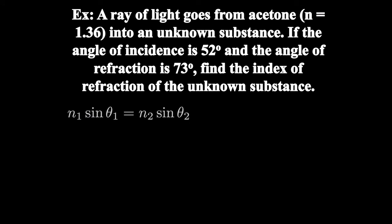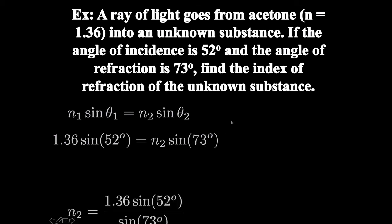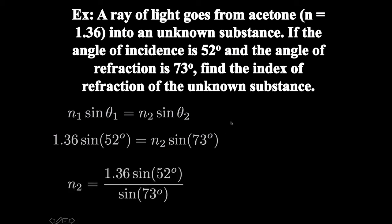So we'll start with Snell's Law again. Medium 1 is going to be the acetone with the index of refraction of 1.36. The angle between the ray and the normal in the acetone is 52 degrees. The index of refraction of the second medium is unknown, but we know that the angle between the ray and the normal is 73 degrees. So we just divide both sides in this equation by the sine of 73 degrees, plug this all into our calculator, and we get an index of refraction of 1.12.